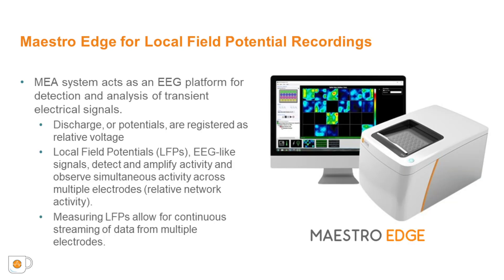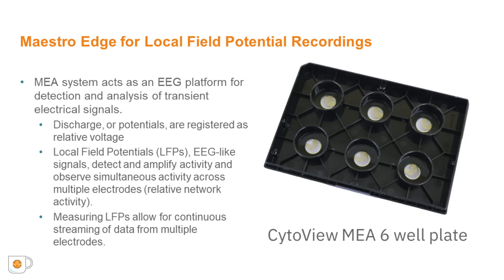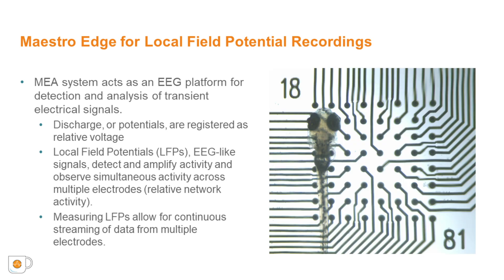The Maestro systems act as EEG platforms for detection and analysis of transient electrical signals. We utilized the Maestro Edge for these studies with a 6-well, 64-electrode side-of-view plate. Recordings can be interpreted as local field potentials or EEG-like signals for detection and amplification of activity. Measuring LFPs allows for continuous streaming of data from multiple electrodes surrounding the larvae. Prior to solidification of the low-melt agarose, larvae were positioned with the dorsal side of their head and body in contact with electrodes.